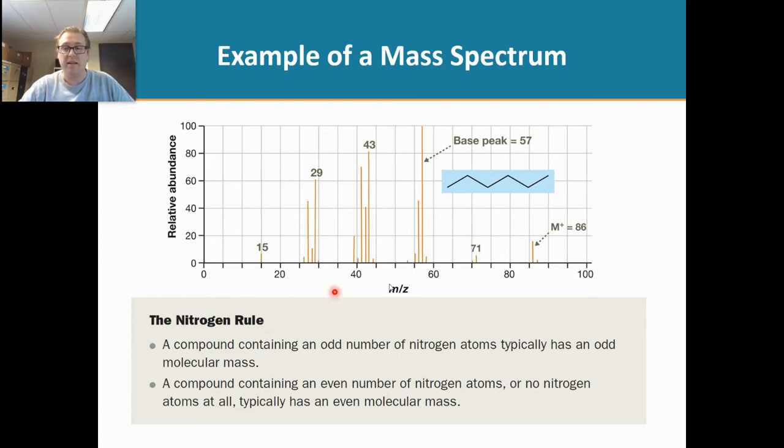It simply states that if you locate your molecular ion peak, and if it is odd, then there is a good chance that you have a nitrogen atom in your mass spec. Like, if your molecular ion peak is even, like in this example, then you probably have no nitrogens, or you have an even amount of nitrogens. So expanding that, what I just said,